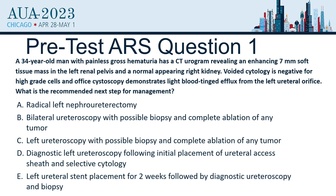So the first pre-test question. A 34-year-old man comes to you with painless gross hematuria. He has a CT urogram revealing an enhancing seven-millimeter soft tissue mass in the left renal pelvis and a normal-appearing right kidney. His voided cytology is negative — no high-grade cells found. Office cystoscopy demonstrates light blood coming out of the left ureteral orifice, the same side where the CT showed a lesion. What is your recommended next step for this patient?